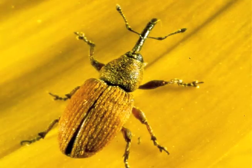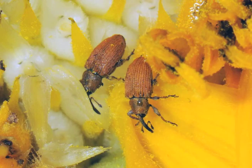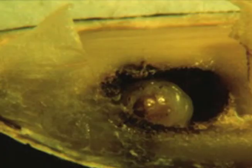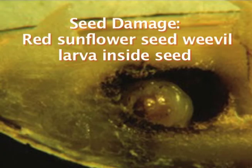Red sunflower seed weevil is about an eighth of an inch long and reddish-brown in color. The larvae consume about a third of the kernel, which reduces the seed weight and oil content of the sunflower.